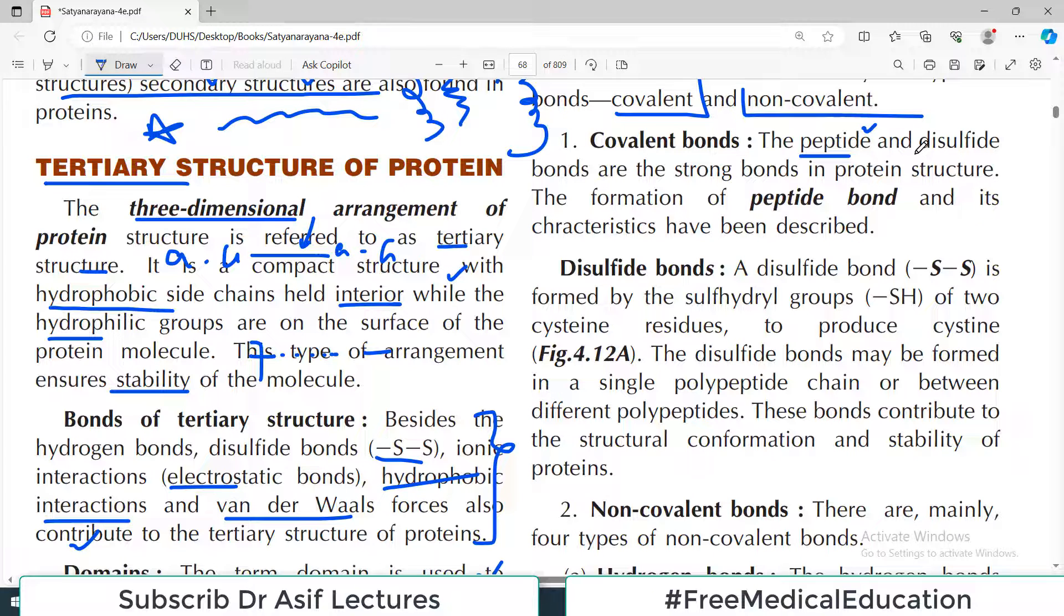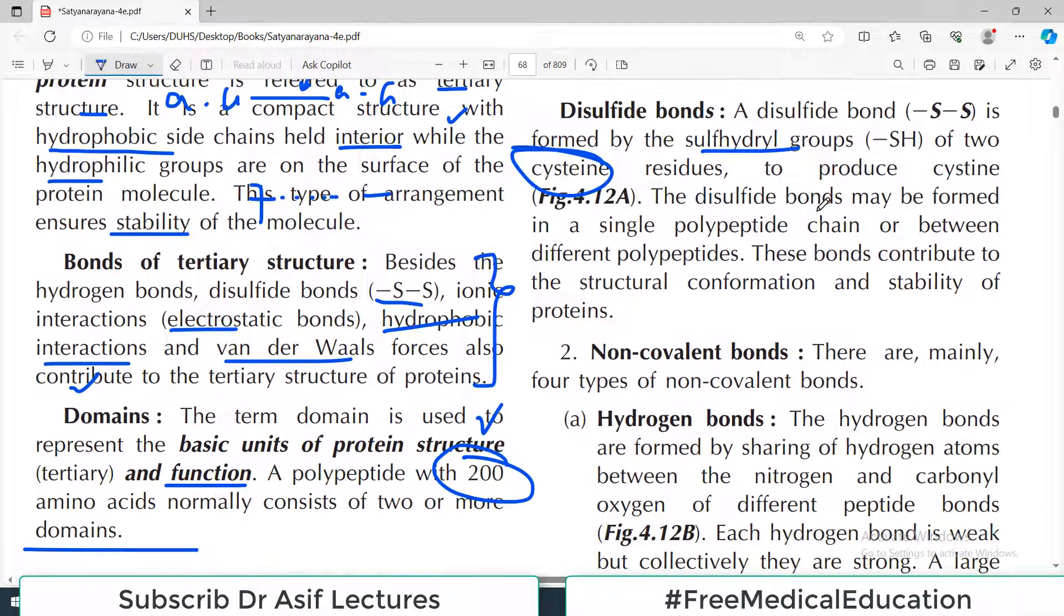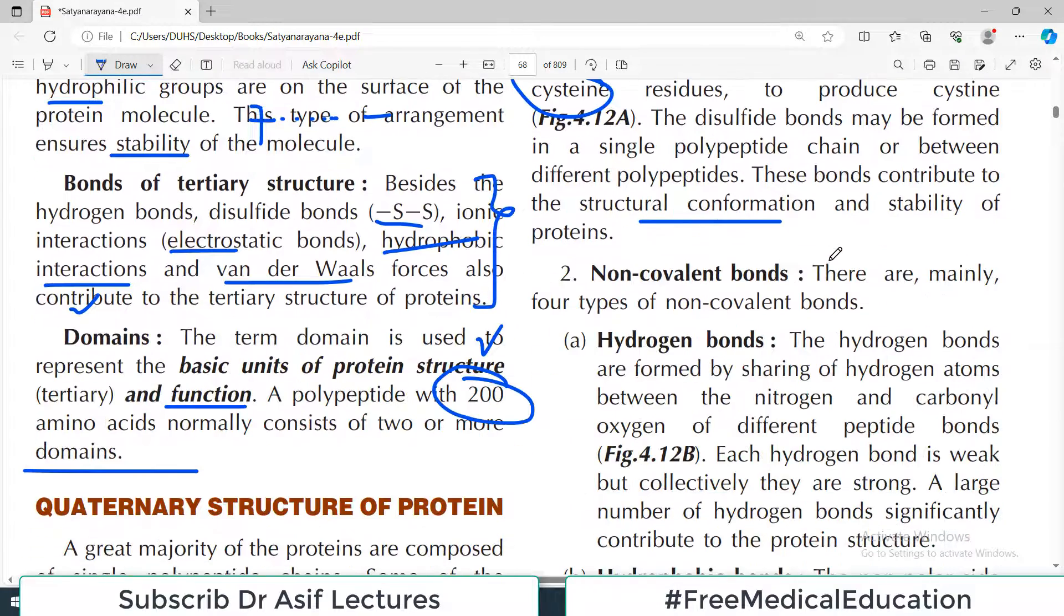The other covalent bond is the disulfide bond. Disulfide bond is formed by the sulfhydryl groups of two cysteine residues. It's a very strong bond, actually. And they contribute to the structural confirmation of the whole protein structure.